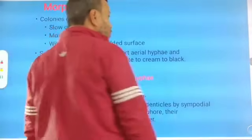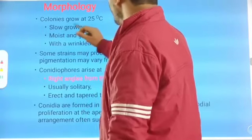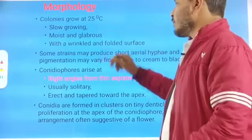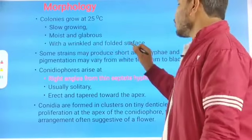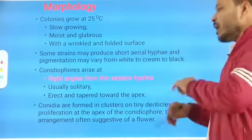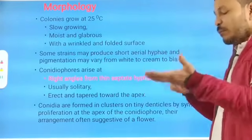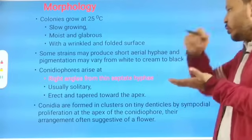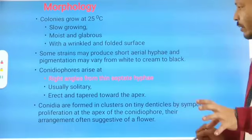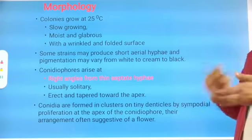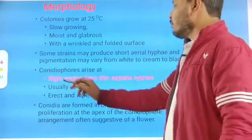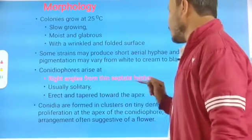Regarding morphology, colonies grow at around 25°C. They are slow growers, moist and glabrous, with a wrinkled and folded surface. Some strains may produce short aerial hyphae. Pigmentation may vary from white to cream to black. Conidiophores arise at right angles from thin septate hyphae.